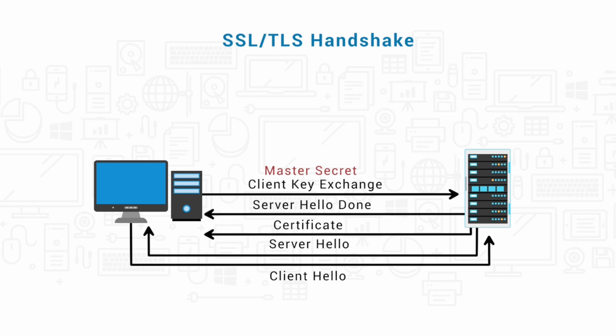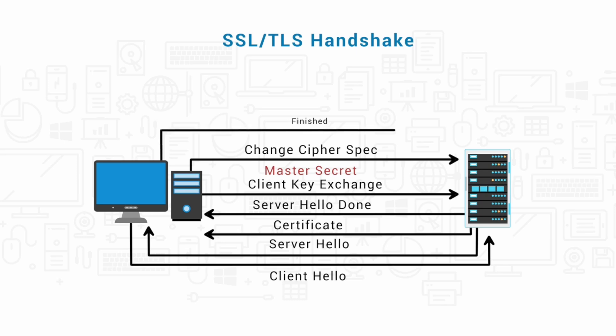At this point, all other data for the connection is derived from the master secret. The client sends a changed cipher spec message that says to the server: everything that I'm going to be sending you from now on will be encrypted. After that, the client informs the server that it's done by sending a finished message. The finished message contains important information like a hash and MAC. The server receives the hash and MAC and attempts to decrypt this finished message and verify it. If it fails to decrypt the message, the handshake is considered to have failed and the connection is ended.